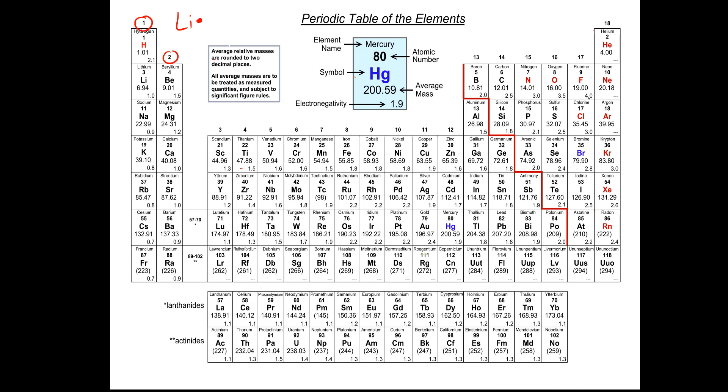Beryllium has two valence electrons, so we could write beryllium with two dots. Boron is in the third column, so it has three valence. Carbon has four valence, so we have four dots. Nitrogen has five dots. So now we've formed a pair.